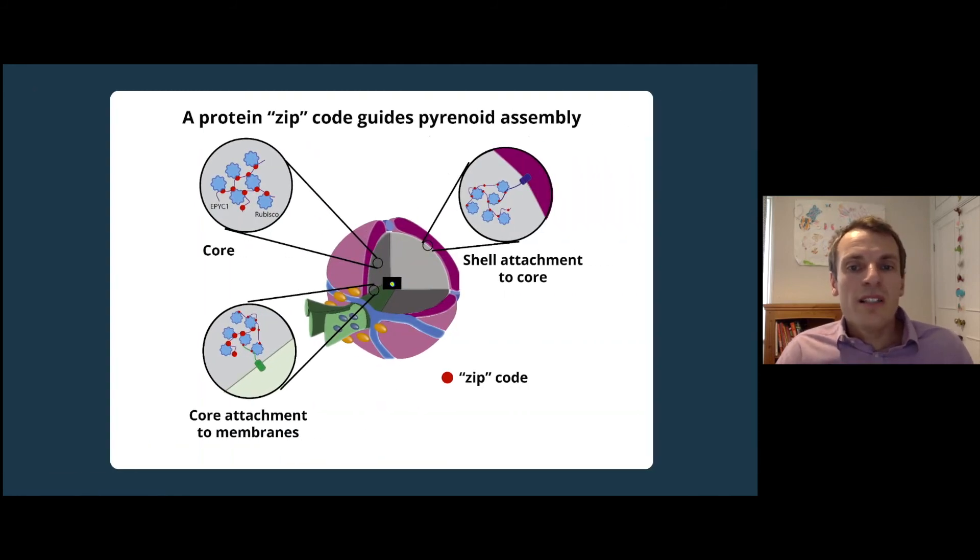When we looked closely at the sequences of the proteins in the pyrenoid, we noticed something very exciting that explained how the pyrenoid is assembled. We noticed that a lot of the proteins found in the pyrenoid contain the same short sequence that we called a zip code.